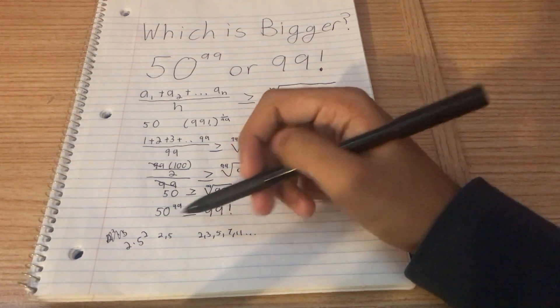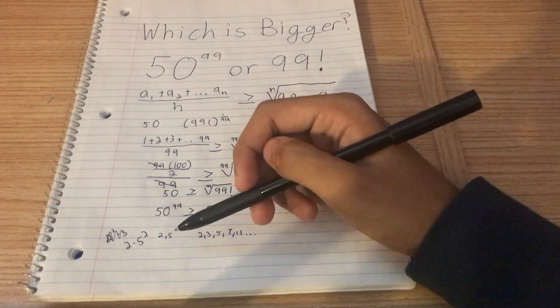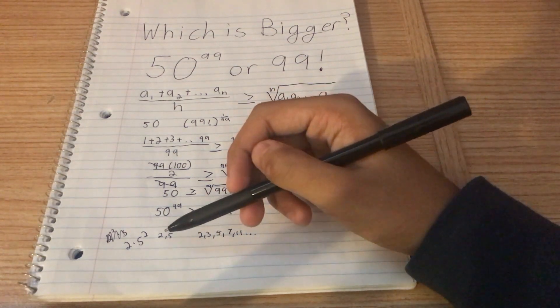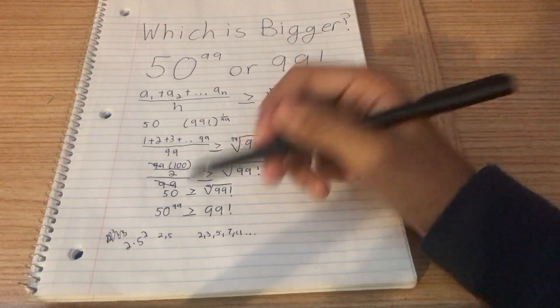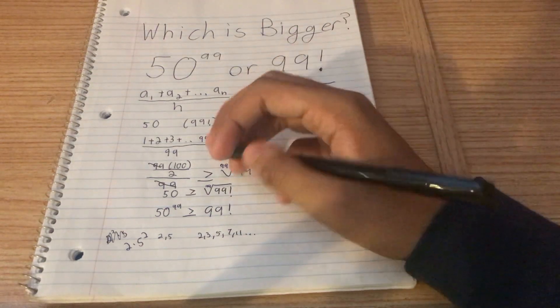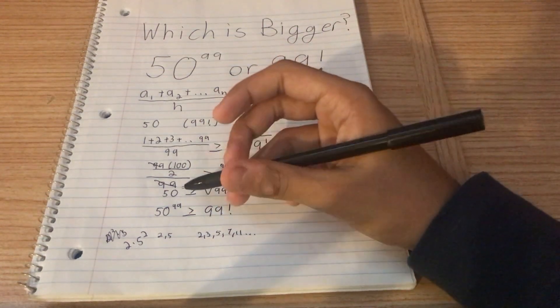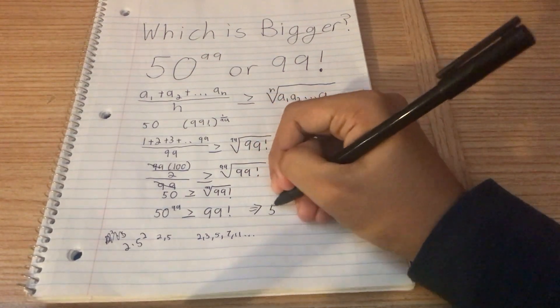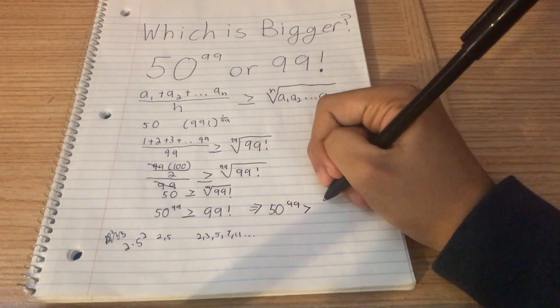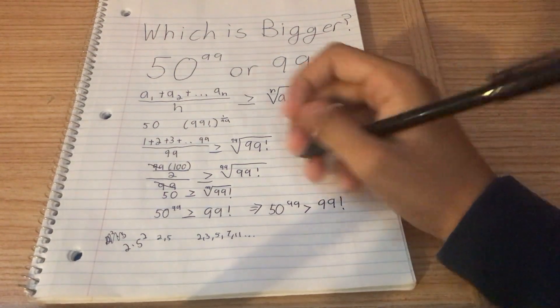Because in order for these two to be equal, these have to have the same number of primes. But the left-hand side doesn't even have 3 or 7 or 11 or any of those other primes. It just has 2 and 5. Which is why you can predict that these terms are not equal. So if they're not equal, then that means that 50 to the power of 99 has to be greater than 99 factorial.